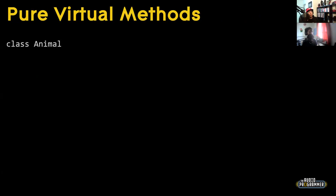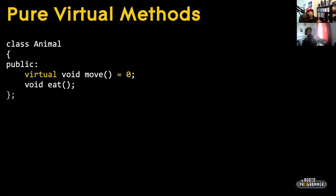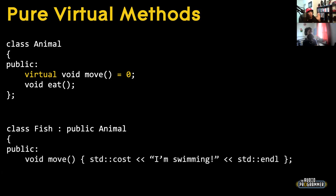A pure virtual function is just slightly different from a virtual function in that the base class does not actually have its own implementation. We know that a pure virtual function is purely virtual when it has equals zero at the end of the function declaration — no curly braces, no implementation. Any derived class like Fish must have an implementation of move, or we will get an error.